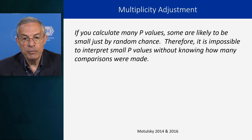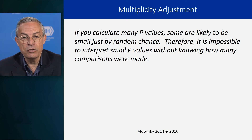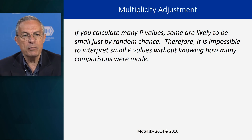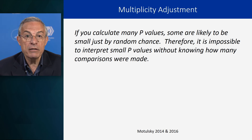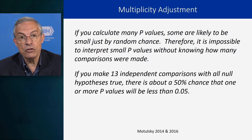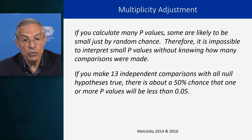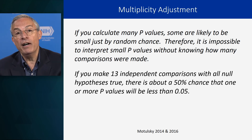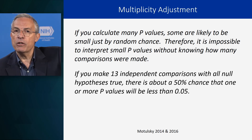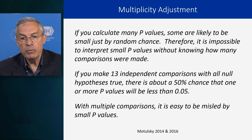In the words of Motolski, who writes in very plain English statistical concepts, he basically says: if you calculate many p-values, some are likely to be small just by random chance. Therefore, it is impossible to interpret small p-values without knowing how many comparisons were made. If you make 13 independent comparisons with all null hypotheses true — in other words, no difference — there is about a 50% chance that one or more p-values will be less than 0.05. It goes back to those diagrams with 1,000 clinical trials; eventually some of them are going to be statistically significant. With multiple comparisons, it's easy to be misled by small p-values.